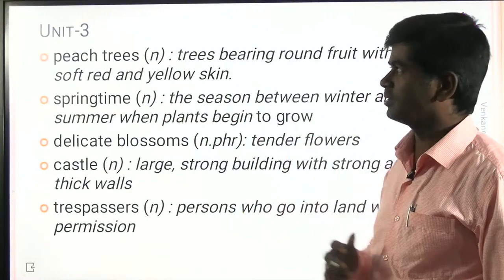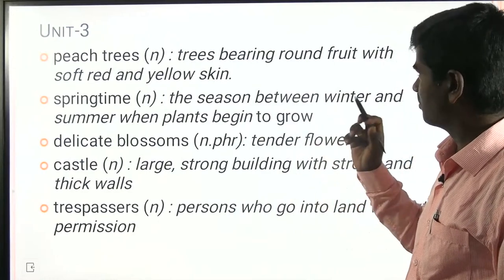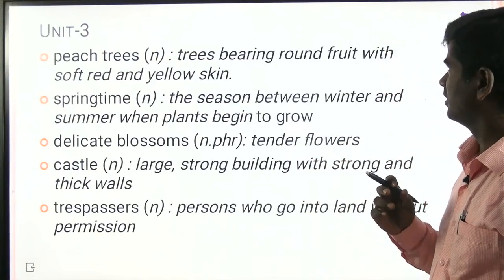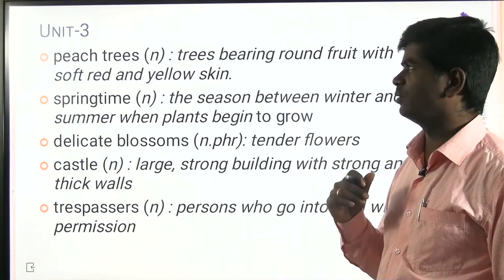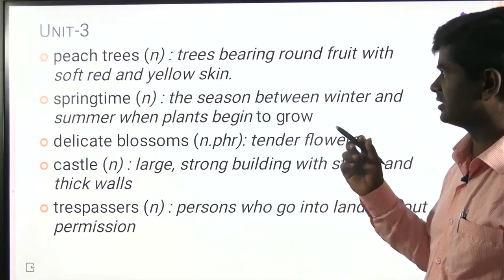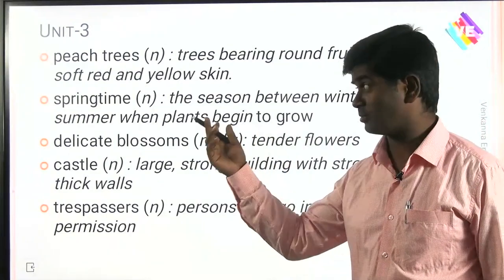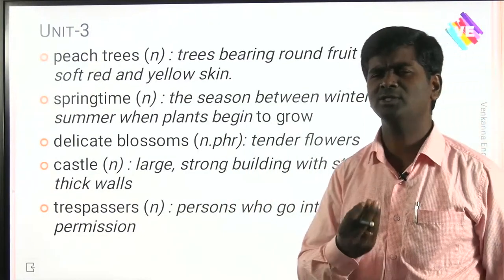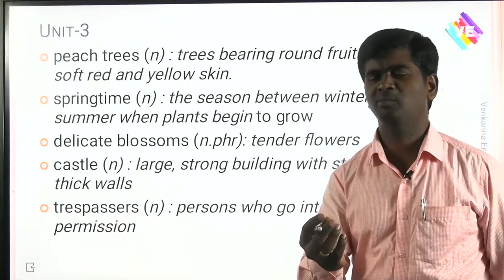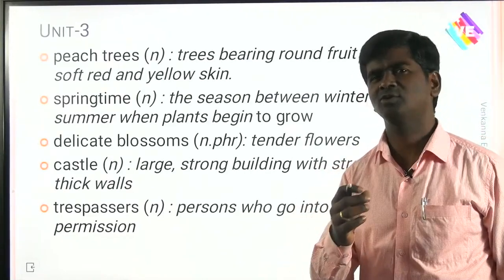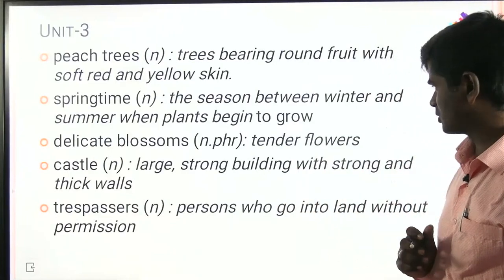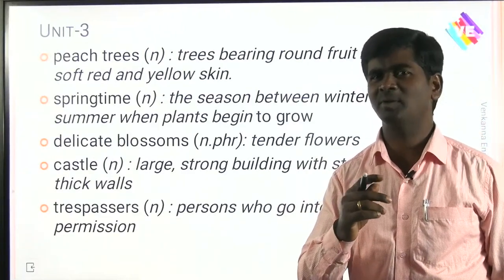Now let's discuss vocabulary. 'Peach trees' — trees bearing round fruit with soft red and yellow skin. 'Springtime' — the season between winter and summer when plants begin to grow. 'Delicate' — very smooth and fine. We also have 'delicate blossoms' and 'tender flats.' Next, a large strong building with thick walls — a castle.